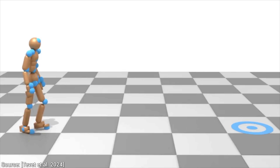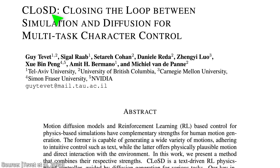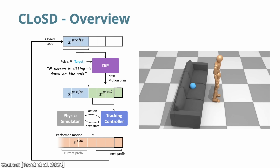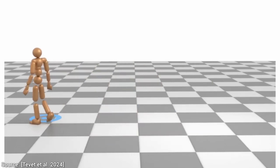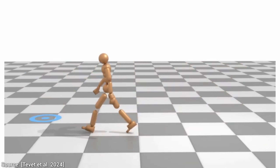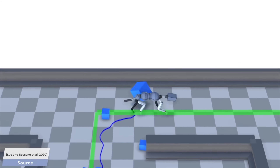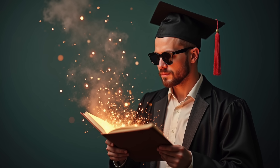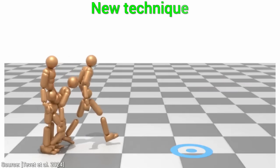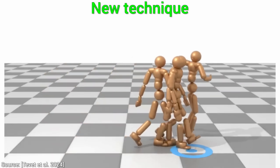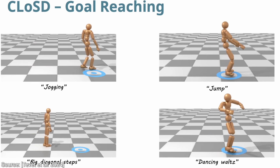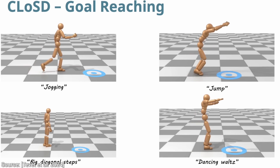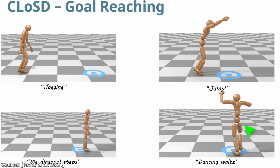Absolutely loving this. And this is why it is called closed — a new controller system works together with this diffusion model to correct it. So what can it do? It can create a sequence where we walk from A to B. But we can already do that. The key is there are many ways to take this journey, and we can add a simple piece of text that tells the character how to do that — hopping, walking, jogging, or it can even waltz to the desired point.